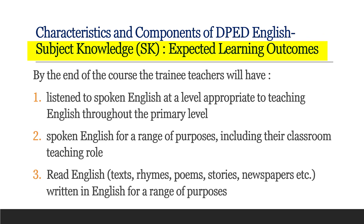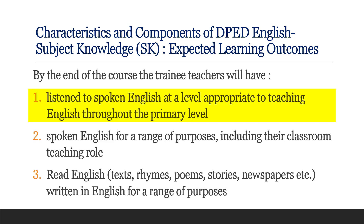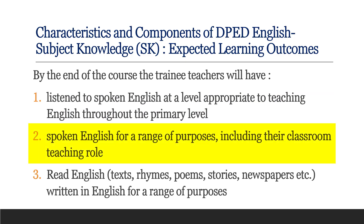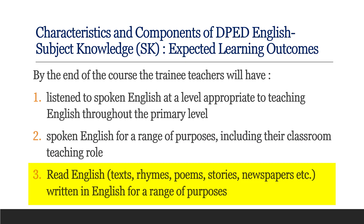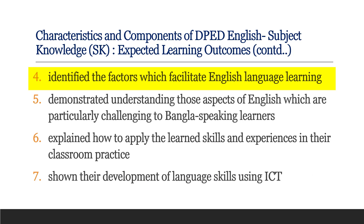Regarding the learning outcomes of English SK: by the end of the course, the training teachers will have listened to spoken English at a level appropriate to teaching English throughout the primary level; spoken English for a range of purposes including their classroom teaching role; read English texts — rhymes, poems, stories, newspapers, etc.; and written in English for a range of purposes.